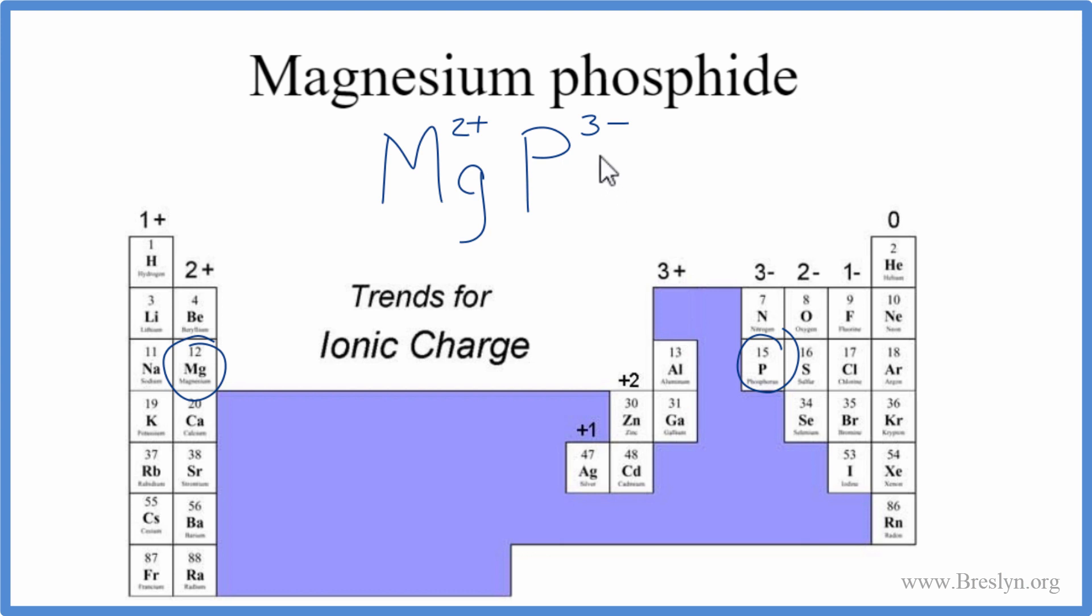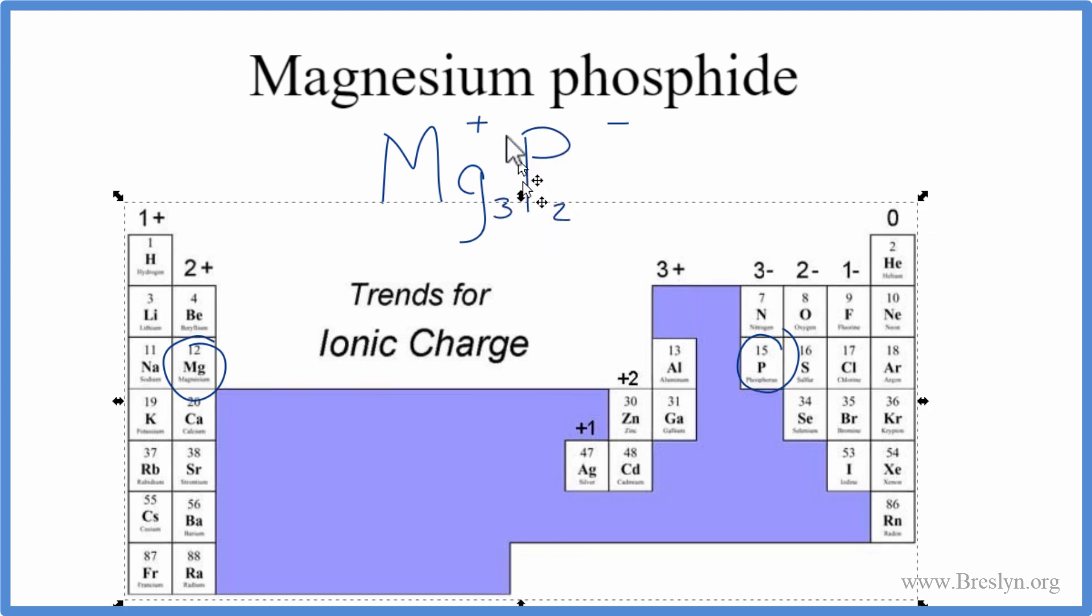But we can use a little trick to help us do that. It's called the crisscross method. We take the 2, we move it here, and the 3 here. We'll get rid of the charges.